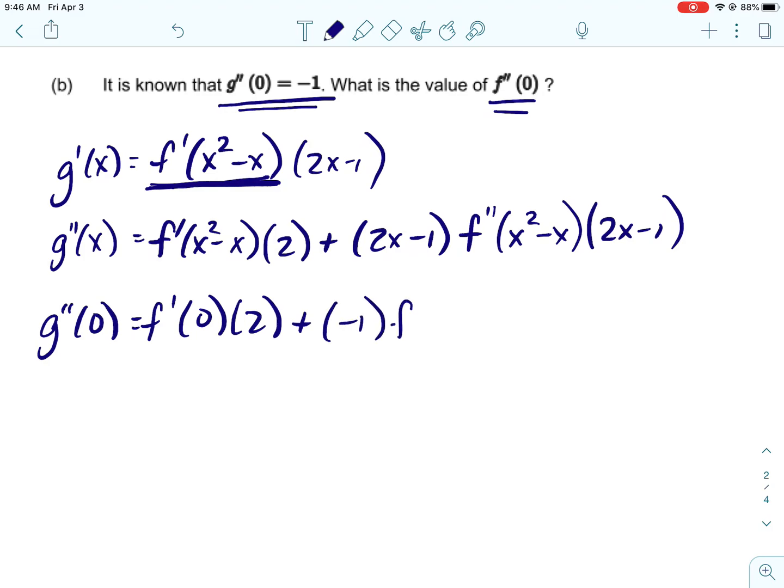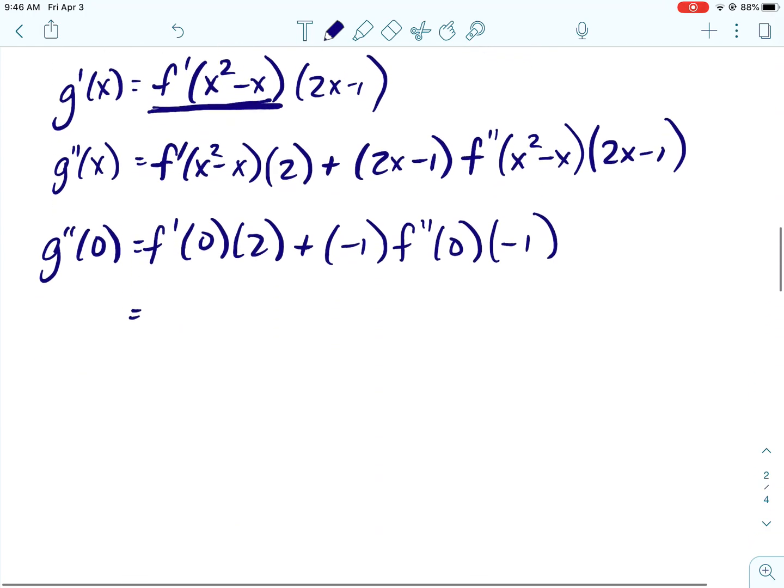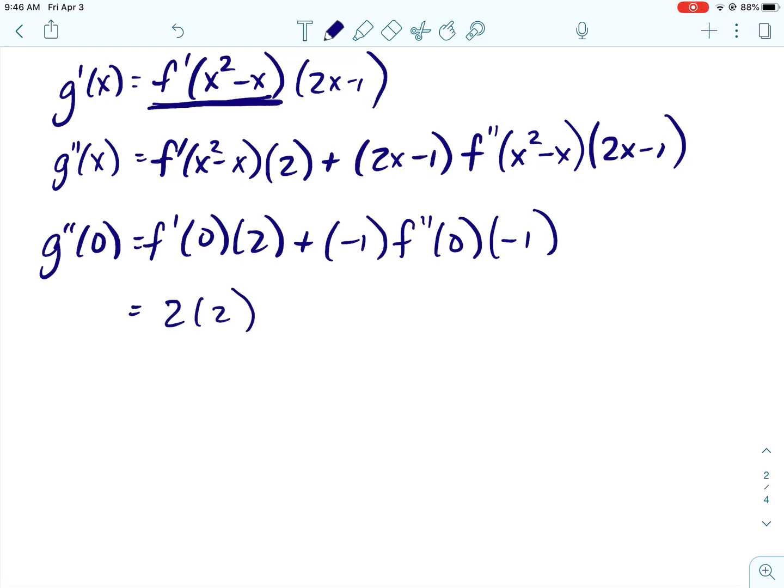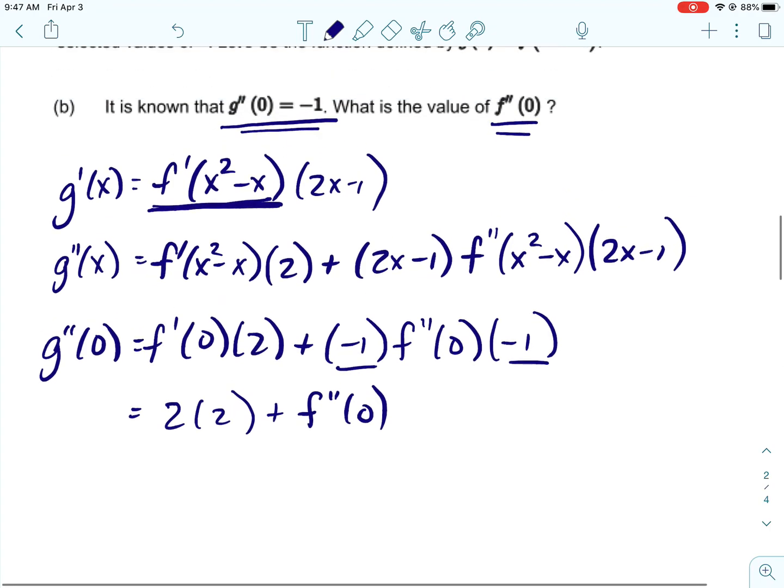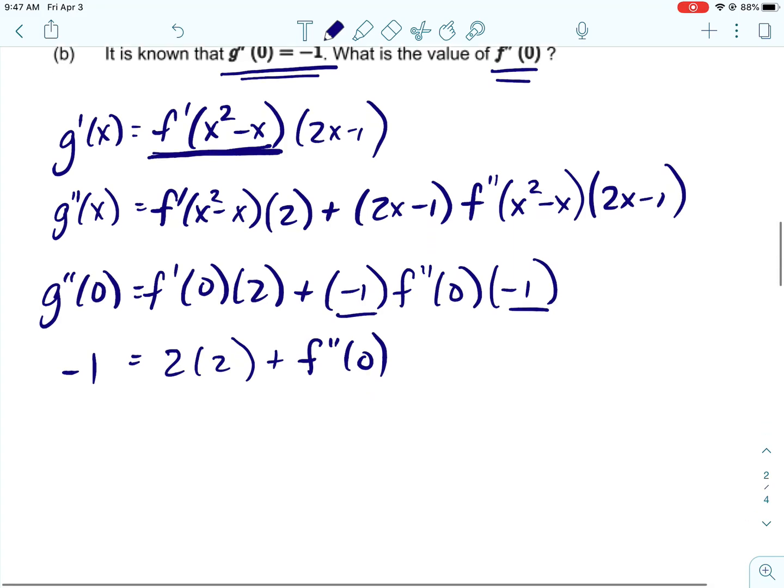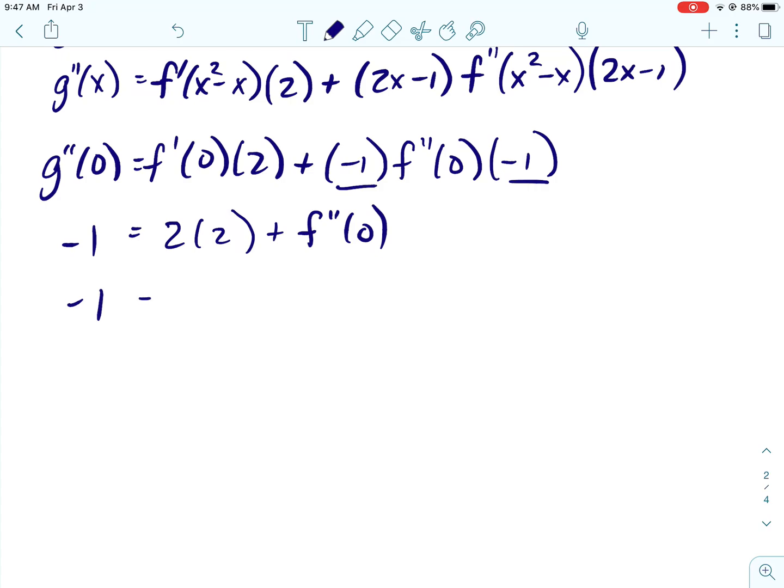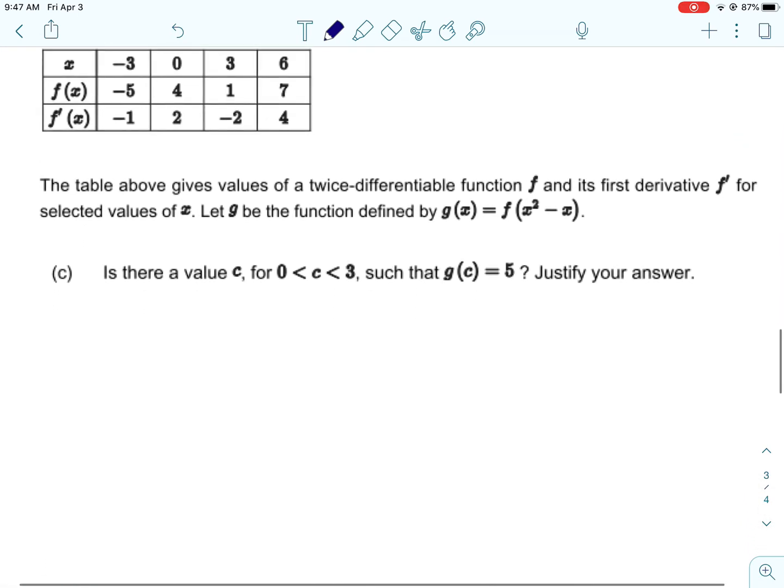Alright, and then I can plug in zero. So zero minus zero. So this would be zero minus one and zero minus one again. f prime of zero I can get from the table, that that is two. Negative one times negative one is positive one, and then f double prime of zero is what I'm looking for. And then g double prime of zero, we were told, is negative one. And then we have a pretty simple equation, and we just need to solve for f double prime of zero.